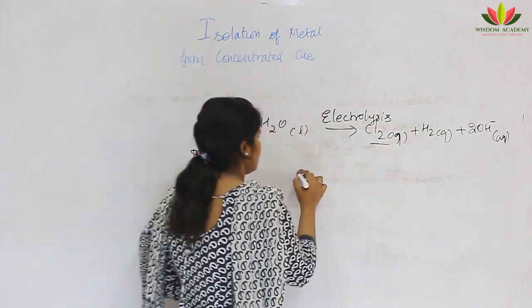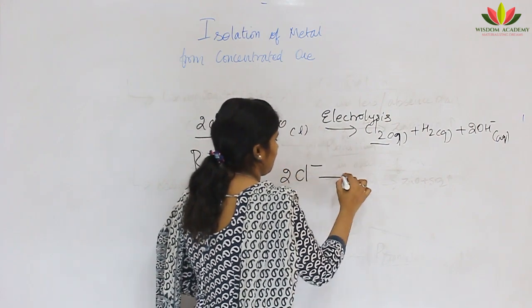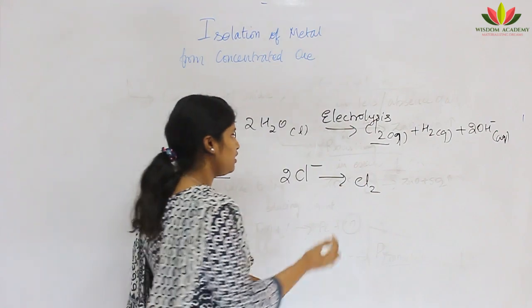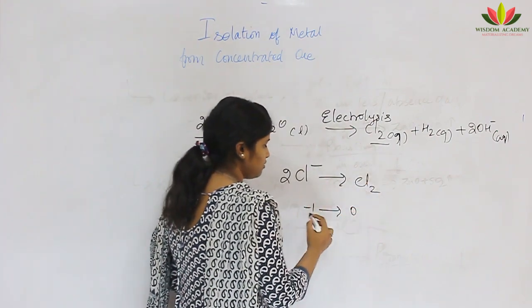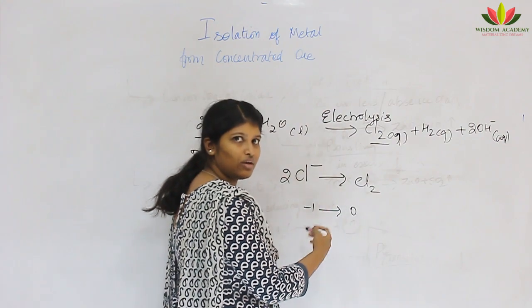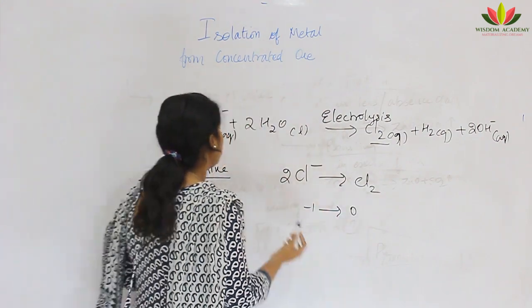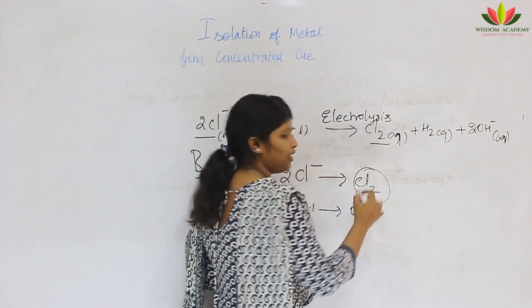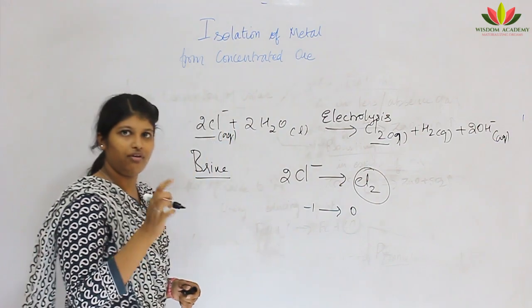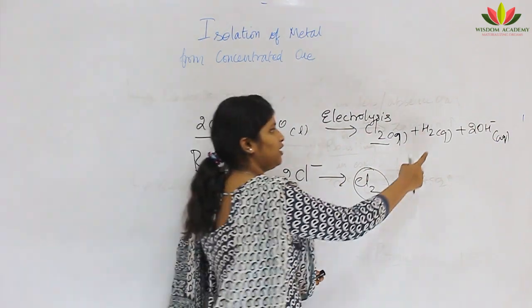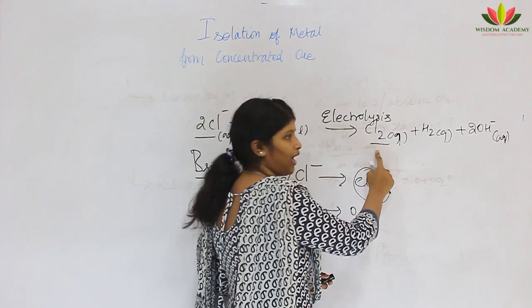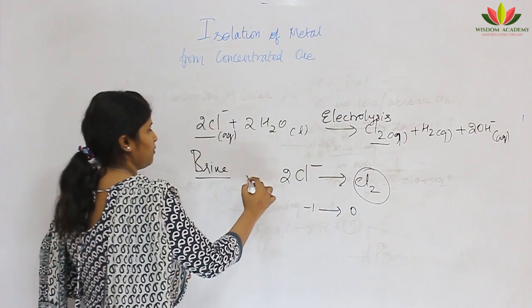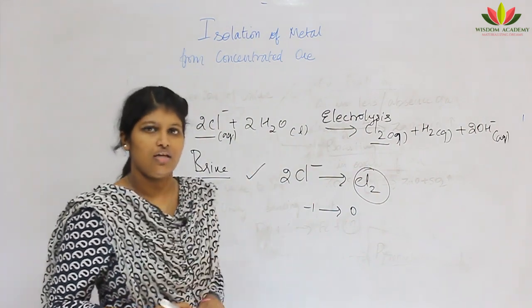The chloride ion (Cl⁻) is oxidized to form Cl₂ — the oxidation number changes from -1 to 0, which is oxidation. Chlorine is liberated at the anode; hydrogen is liberated at the cathode; and OH⁻ remains in the electrolyte solution. So reduction is for metals and oxidation is for non-metals.